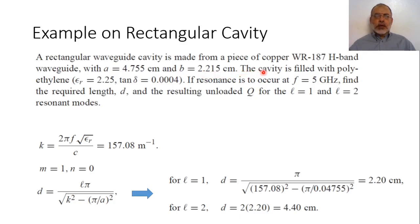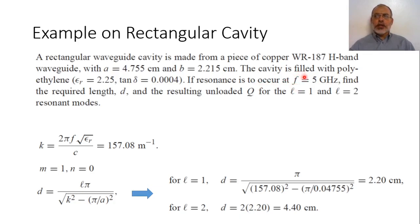The cavity is filled with polyethylene. Polyethylene has a dielectric constant epsilon R equals 2.25 and loss tangent tan-delta equals 0.0004. It is required that resonance occurs at frequency 5 GHz. We need to design a cavity resonator resonating at 5 GHz, find the required length D of this rectangular waveguide cavity, and the resulting unloaded quality factor Q for the modes L equals 1 and L equals 2.